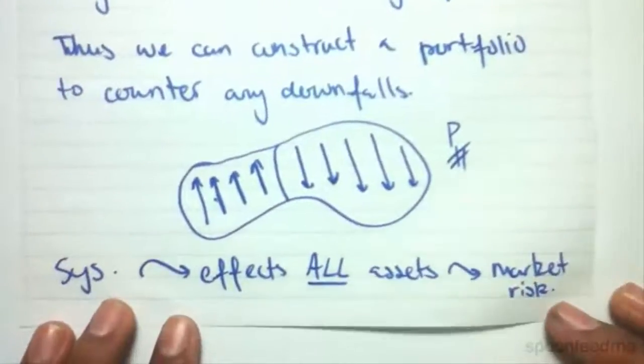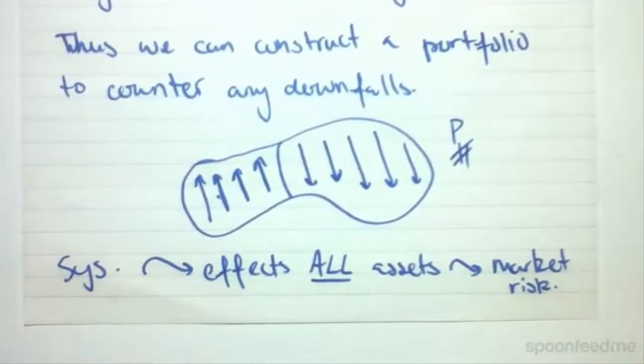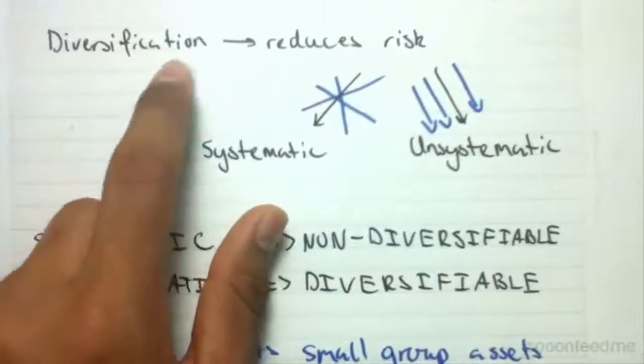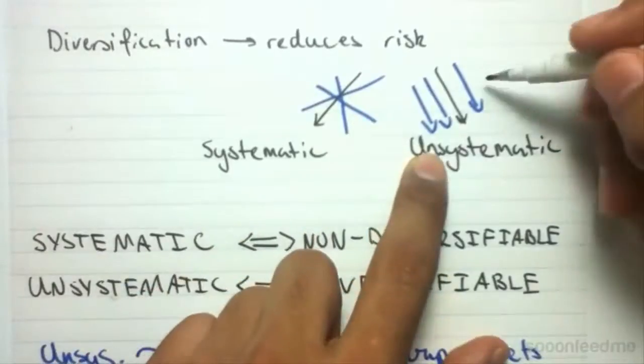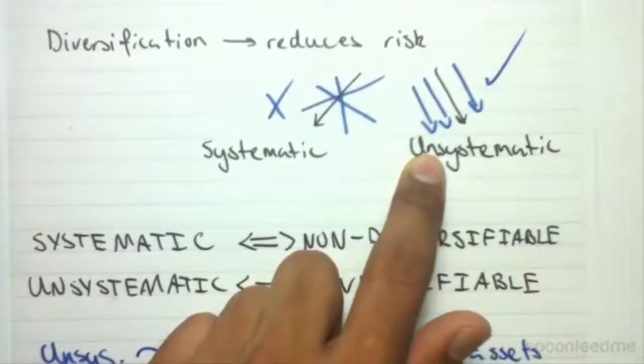And there is no cure for it, basically. And so that's the reason why diversification reduces unsystematic risk but not systematic risk.